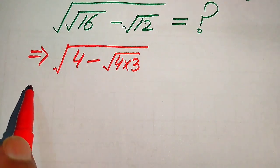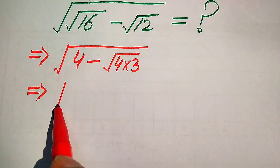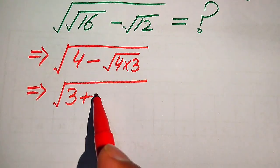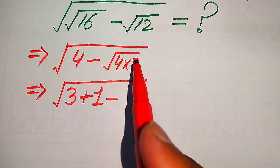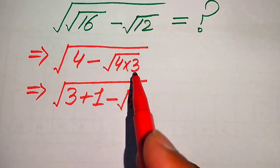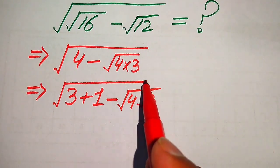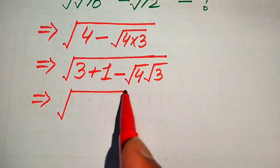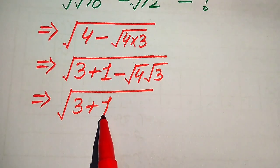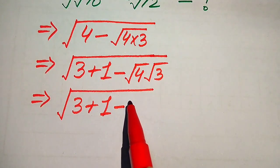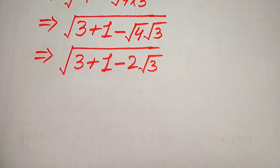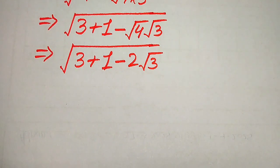We break this value by rewriting 4 as 3 plus 1. Then we apply the square root sign separately on 4 and on 3. Now we have square root of 3 plus 1, minus the square root of 4, which equals 2, times the square root of 3.